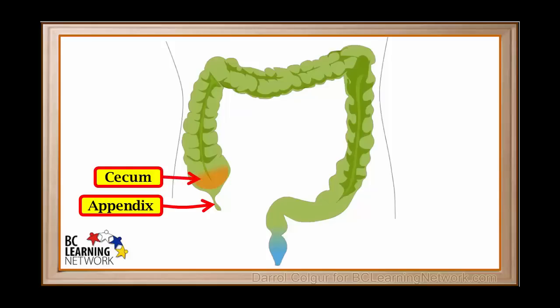The cecum is a pouch near the bottom right of the large intestine. This is where digested food enters the large intestine.